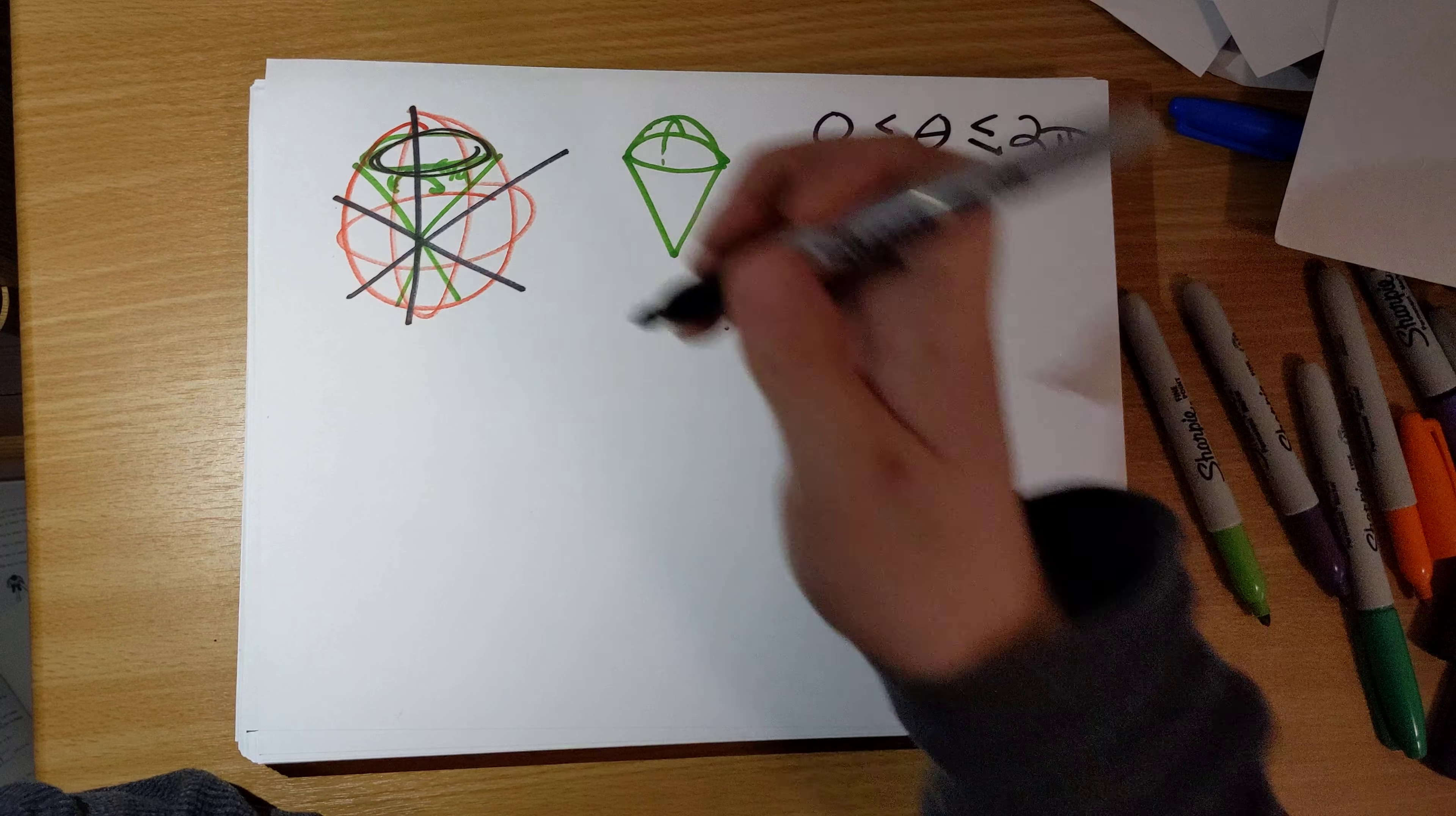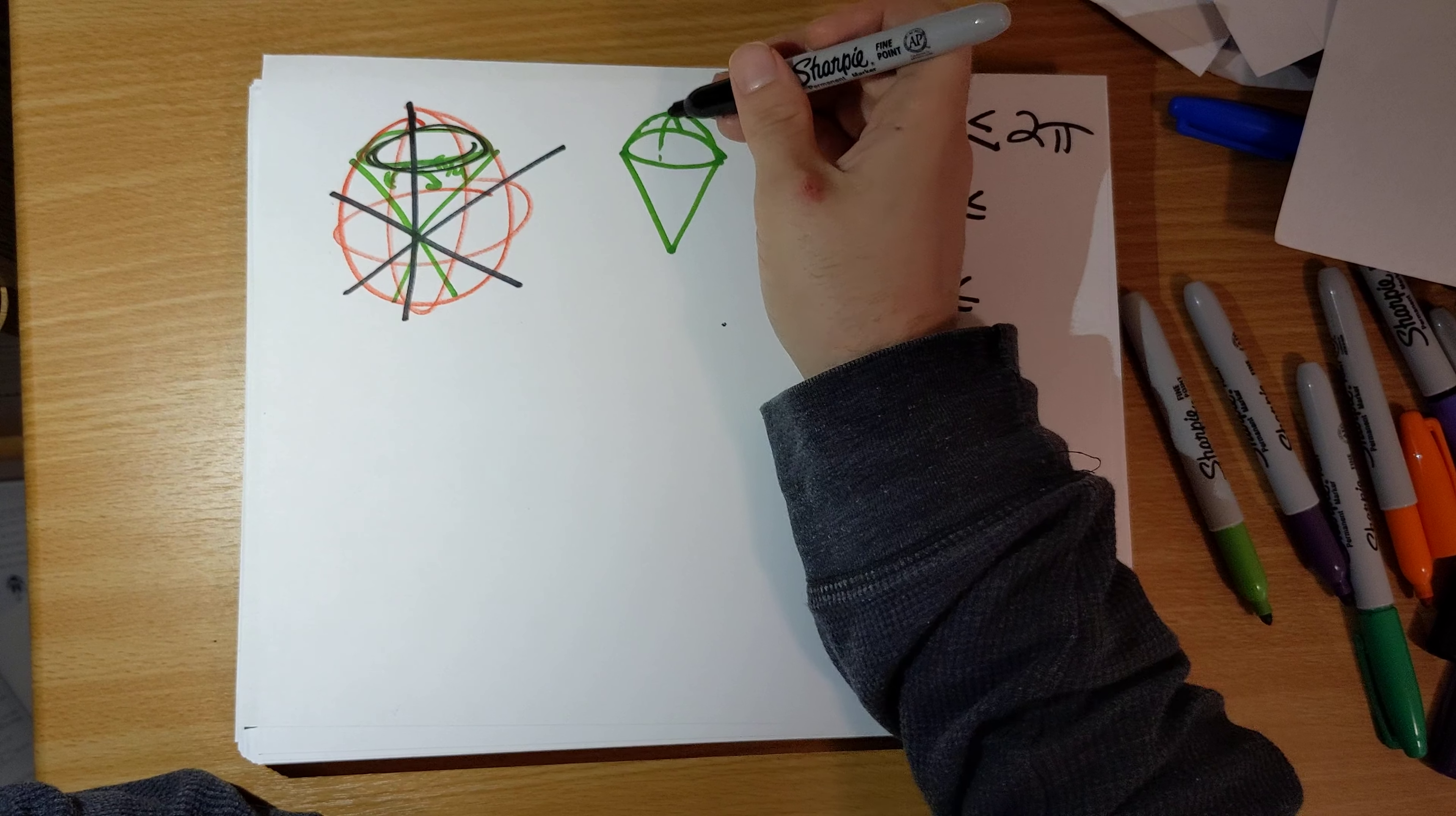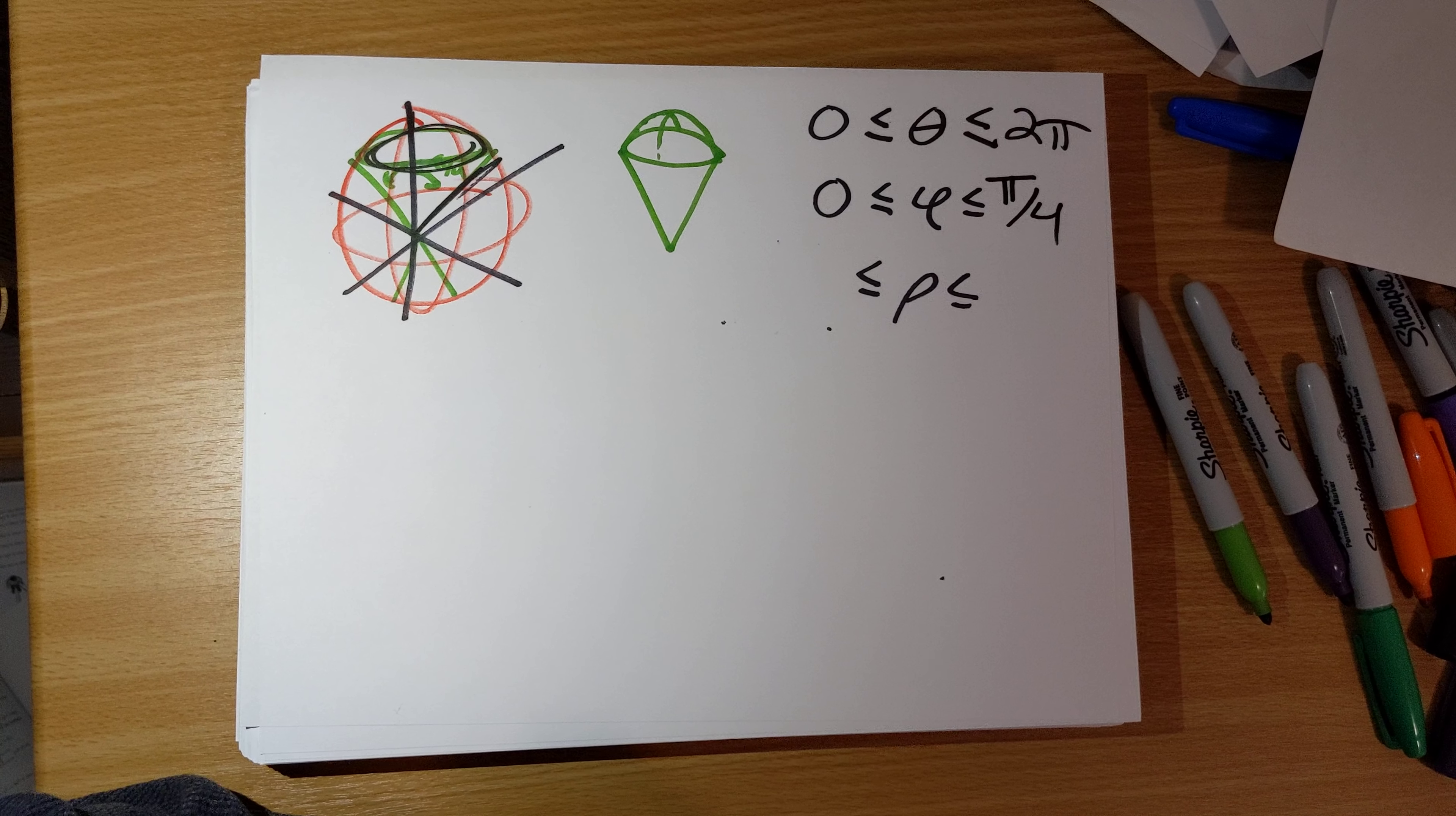Phi is going to be, you know, it's the angle that we are away from the positive z-axis. So the positive z-axis is certainly in part of our ice cream cone. So we start with phi equals 0, and then we go until we hit this boundary right here, when phi equals pi over 4.